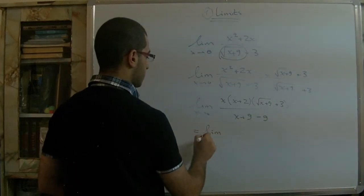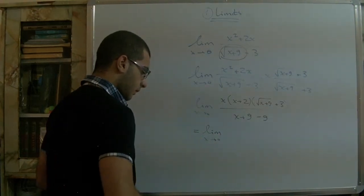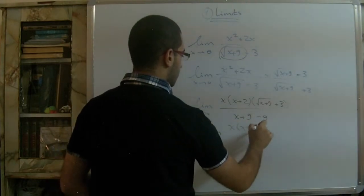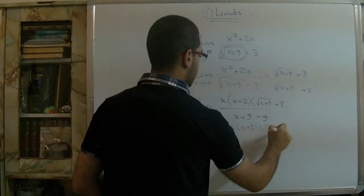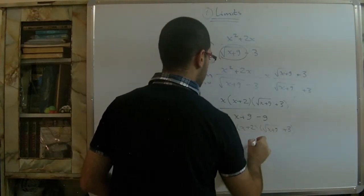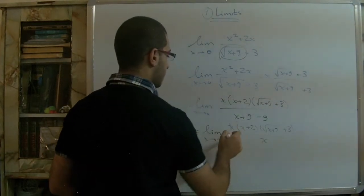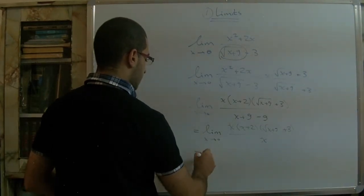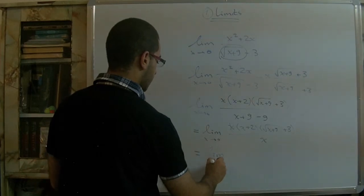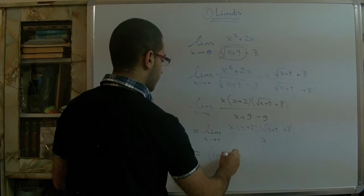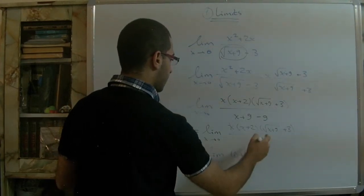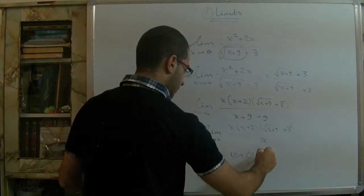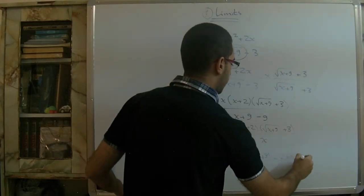After multiplying, the denominator becomes (x + 9) − 9 = x. The x in the numerator and denominator cancel. Substituting x = 0 into the remaining expression gives (0 + 2) multiplied by (√9 + 3) = 2 × 6 = 12.